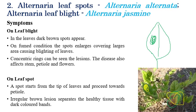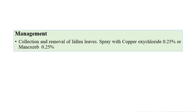For leaf blight, initially dark brown spots appear, which increase and enlarge in size, covering the entire leaf. Concentric rings are a prominent symptom. For leaf spot, the tip of leaves produces towards petiole, and irregular brown lesions separated from healthy tissue by dark color bands can be observed.